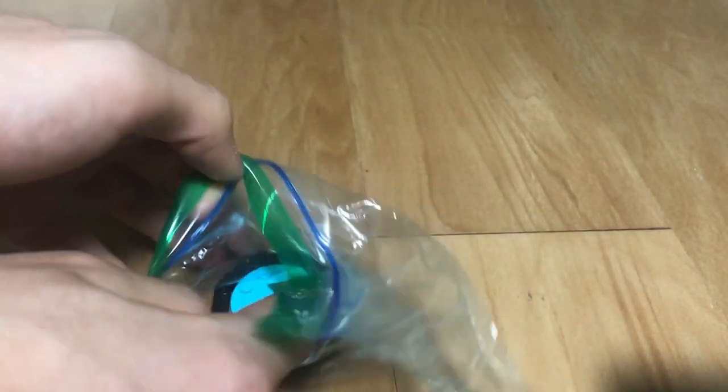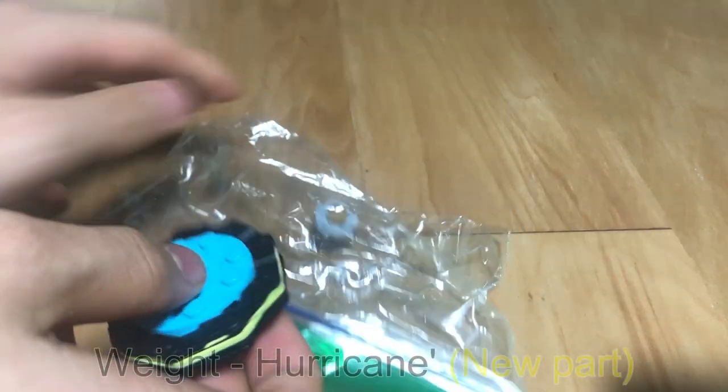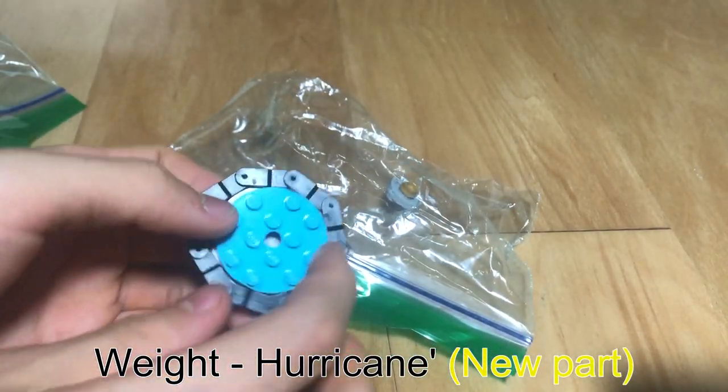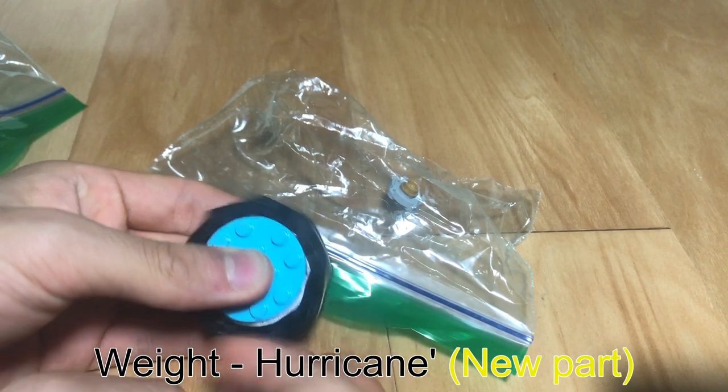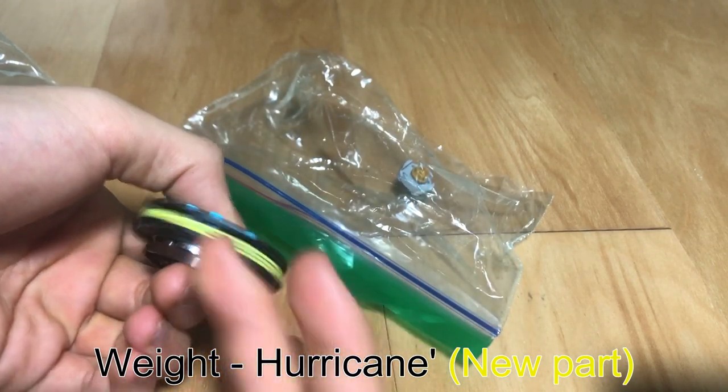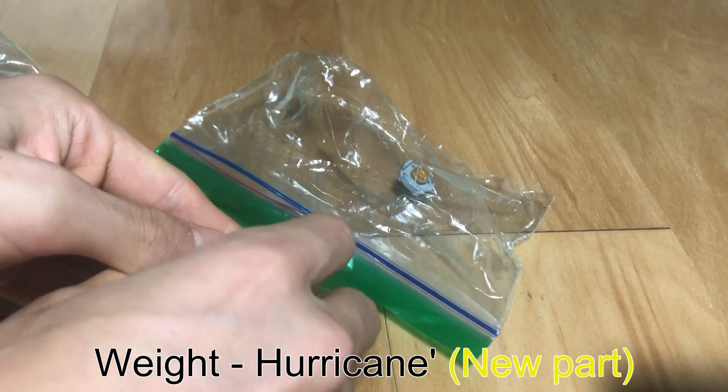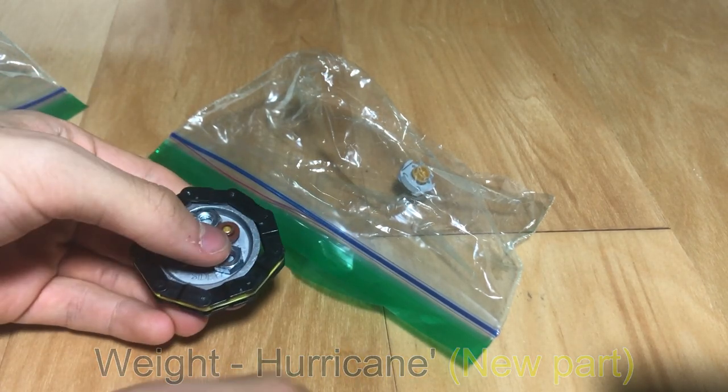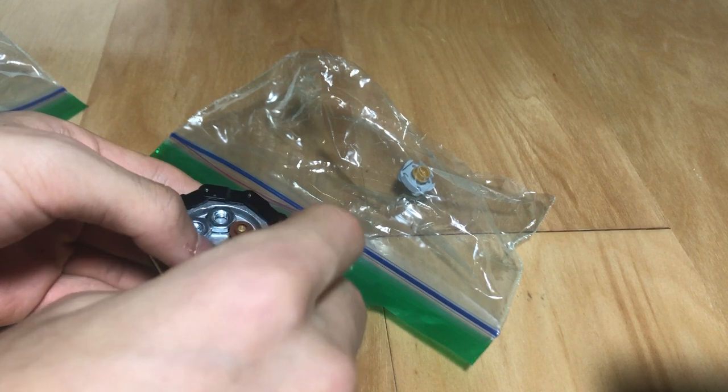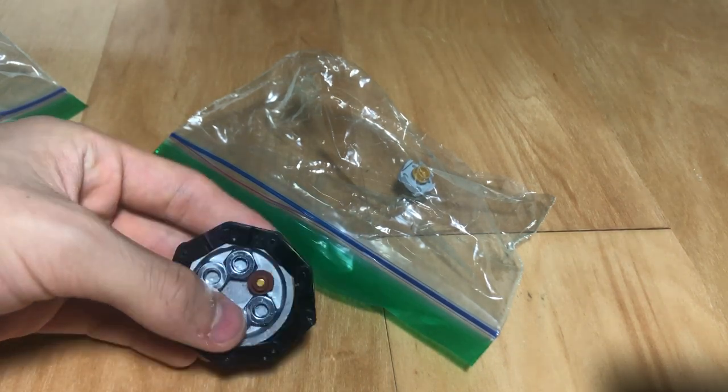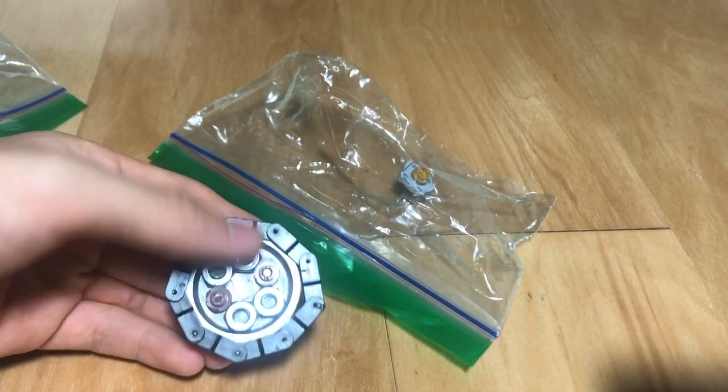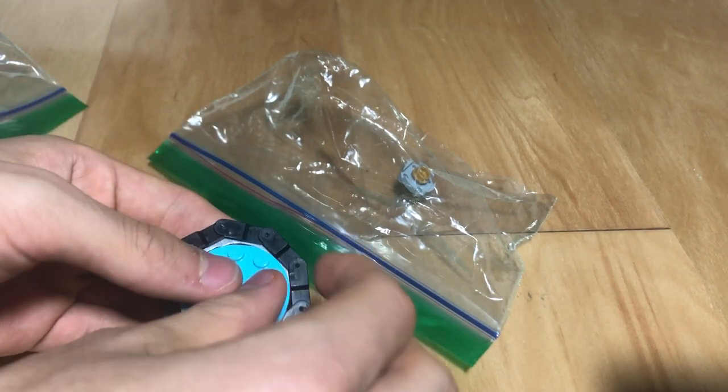And then next we have the weight and frame. Hurricane has its free-spinning ring. It came in LEGO Ashura originally. As you can see, there's a bit more metal to it here and here compared to the regular Hurricane, which is why this is Hurricane Dash.